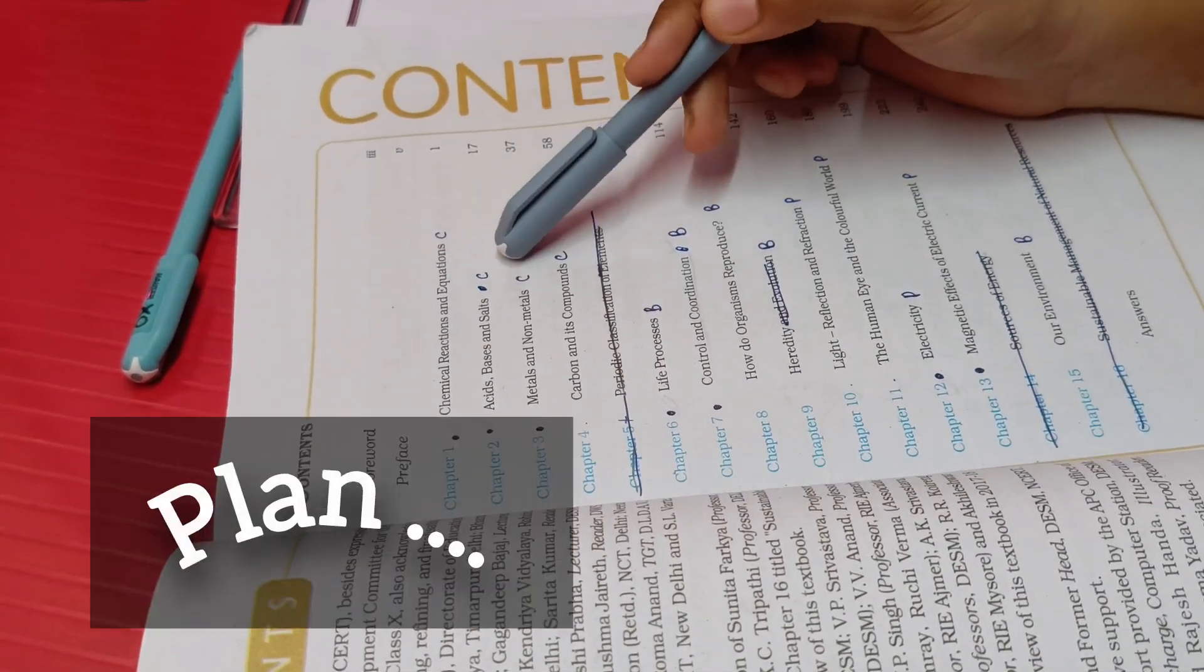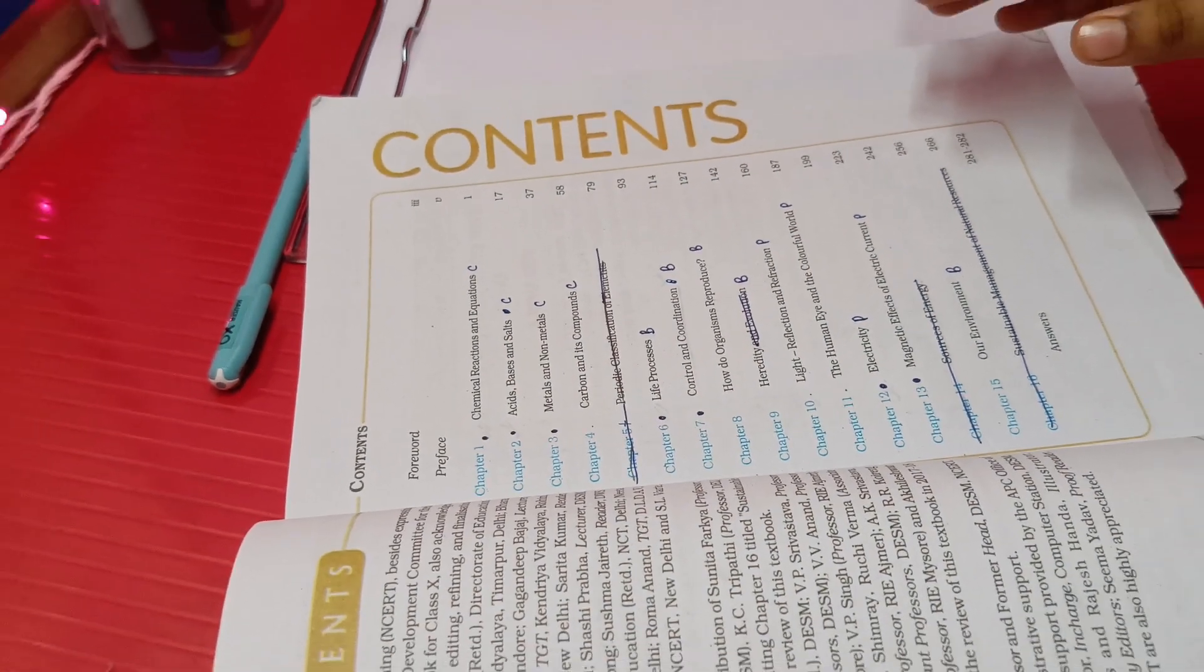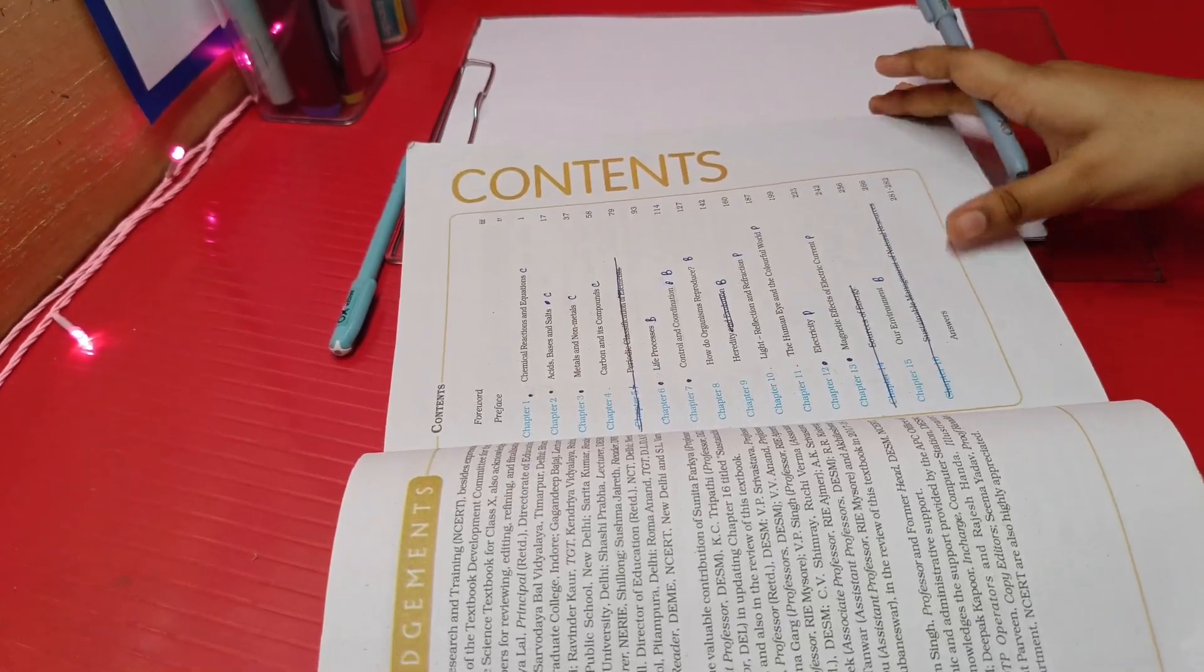So I have decided to start with chapter number 4 that is carbon and its compounds and ending with chemical reactions and equations. So let's begin.